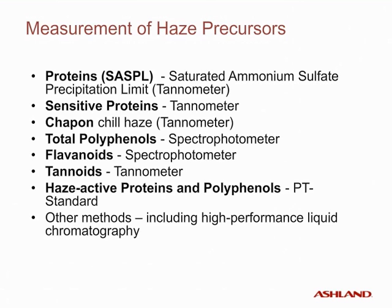Schipan-chill haze is a way to predetermine the stability of a beer by supercooling a beer sample down to a very cold temperature, typically minus 5 to minus 8 degrees Celsius, and measuring the haze it develops as a result. This gives an indication of the future stability of the beer.